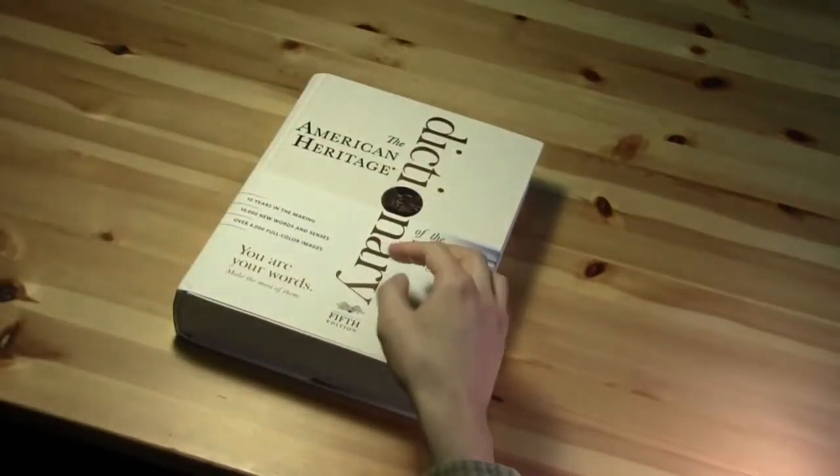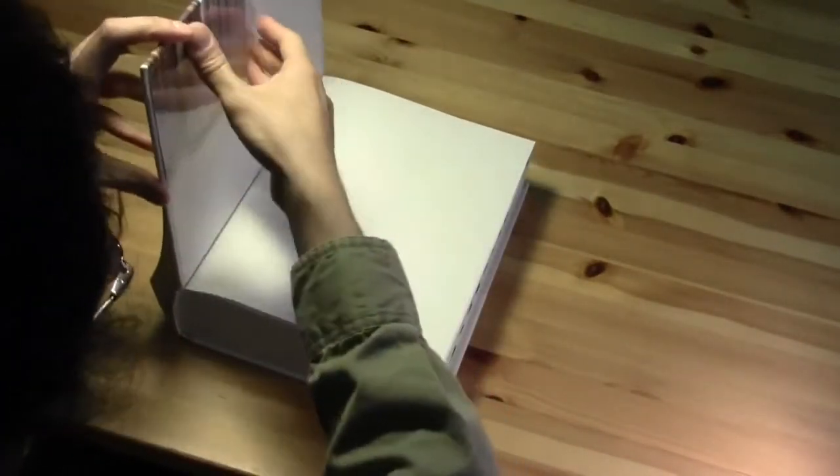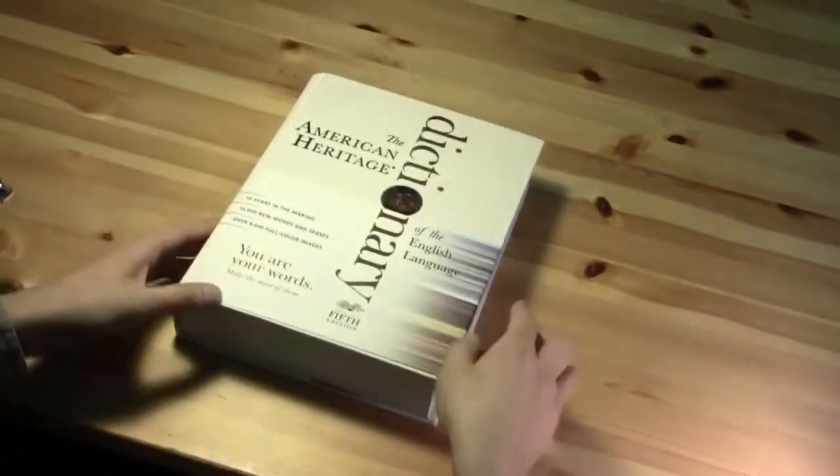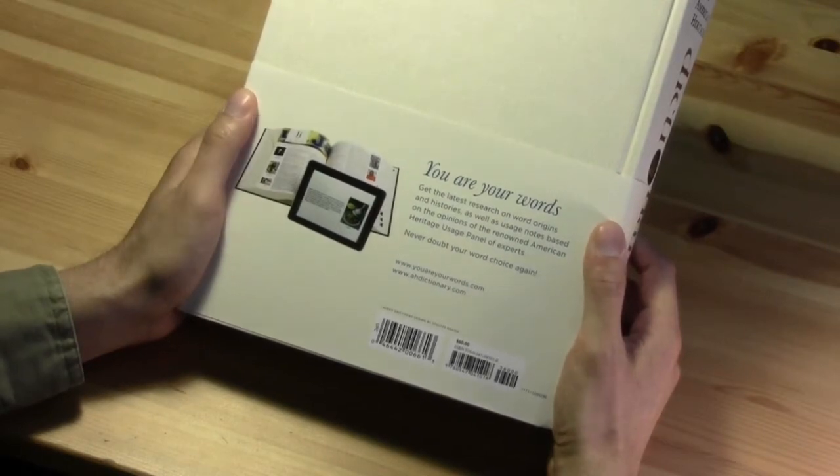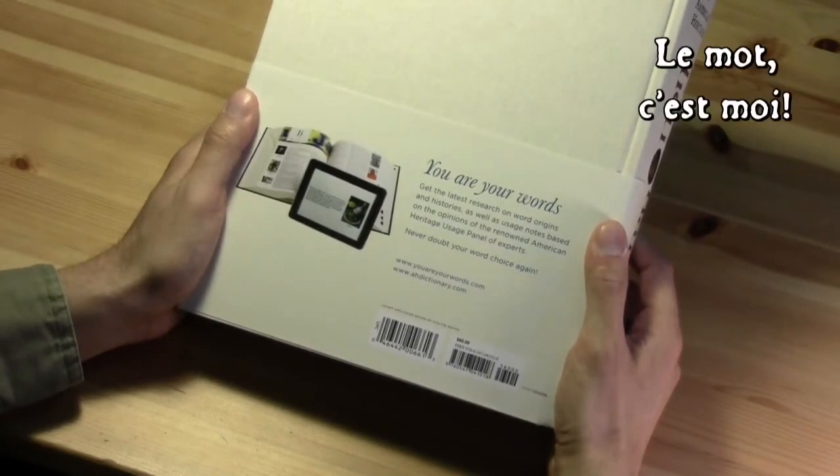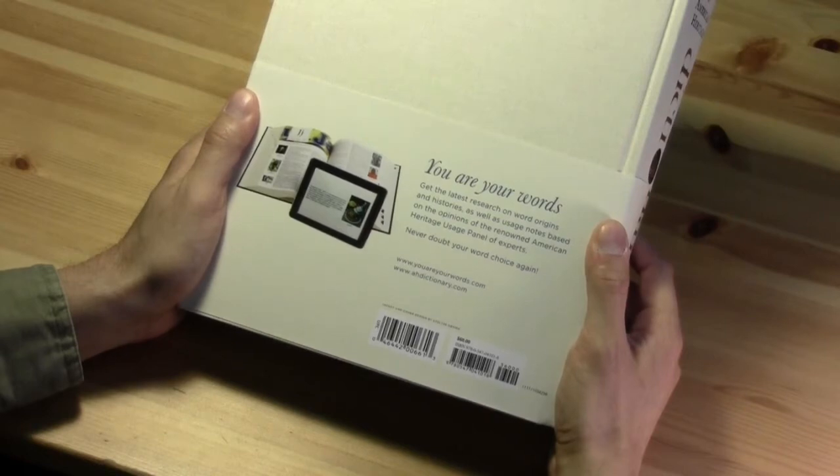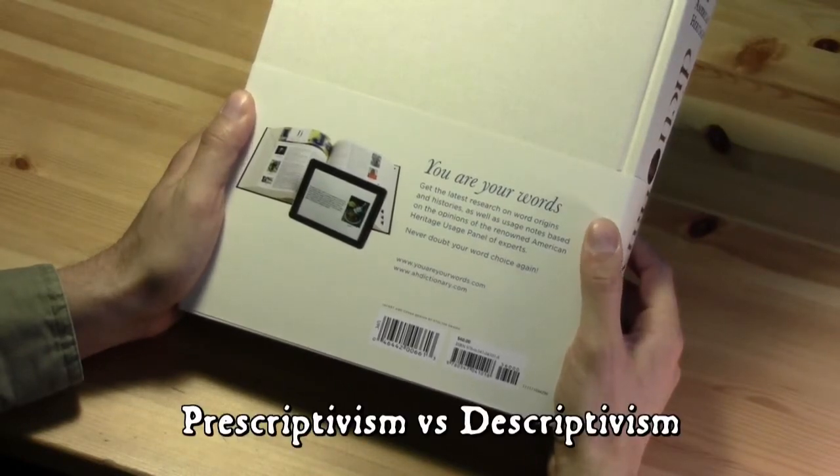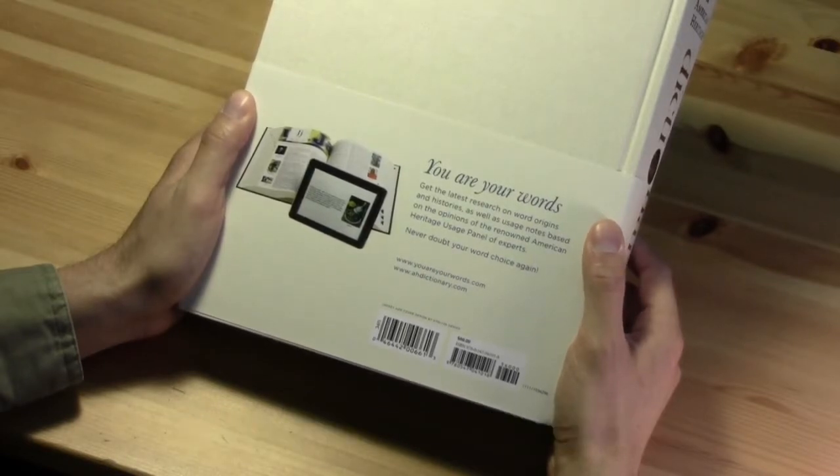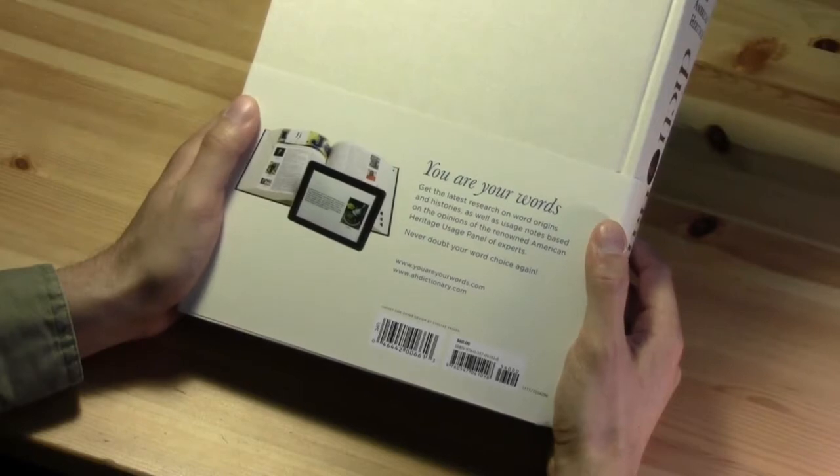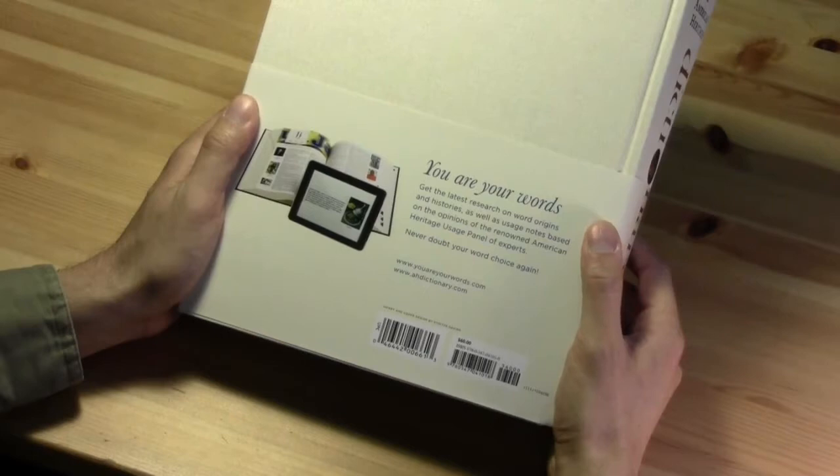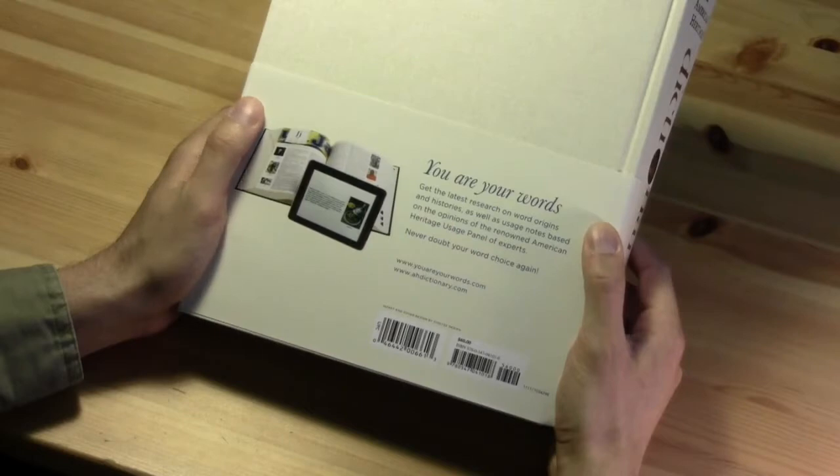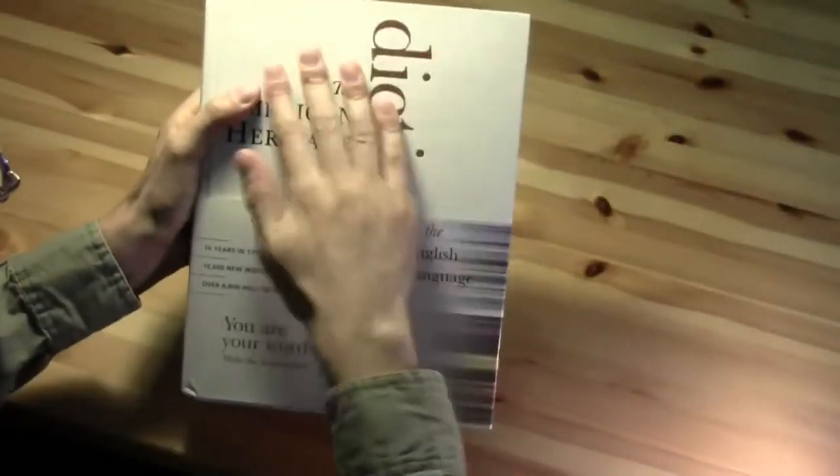That definitely ruins the aesthetic appearance of it. I don't know if this is going to stay. Leave it there for now. As you can see on the back of the wrap around, by the way, the little advertising phrase that they use: 'You are your words. Never doubt your word choice again.' That reflects the idea of prescriptivism - making sure there is a right way of using language and a wrong way of using language. So make sure you don't get it wrong. If you subscribe to that view of language, well, this may be the dictionary for you. But on the descriptive side, they do also say 'get the latest research on word origins and histories,' so that kind of balances those two. It's a nice cloth-bound cover.